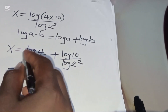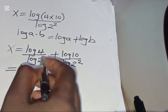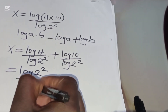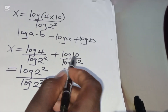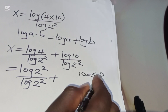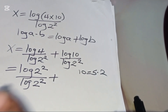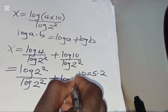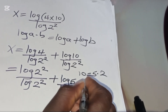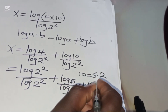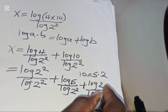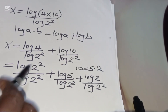Now, since 4 can be expressed as 2², we have log(2²) divided by log(2²) for the first term. For log(10), we note that 10 can be expressed as 5×2, so that term becomes log(5) divided by log(2²), plus log(2) divided by log(2²). Applying the power property of logarithms to the denominator log(2²).